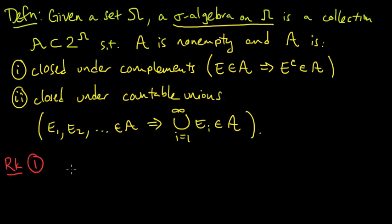So here's a first remark. The set omega itself is always a member of any sigma algebra on omega. So how do we know this? Well, here's a little proof. We know that the sigma algebra A is non-empty, so it has some set E. So let's say E is a member of this collection, this sigma algebra.